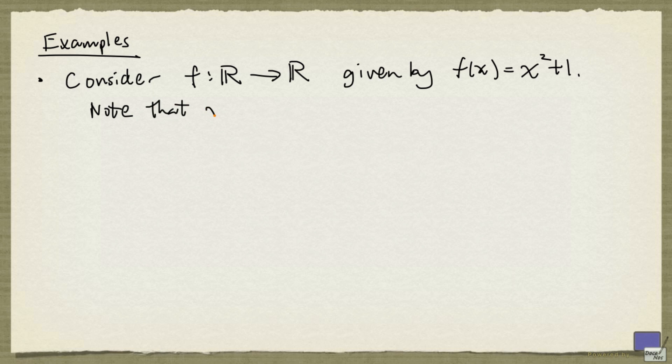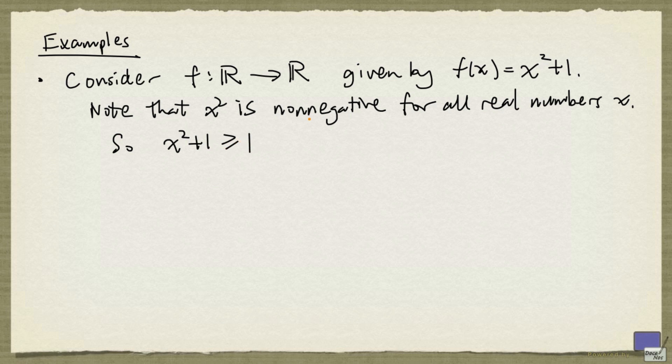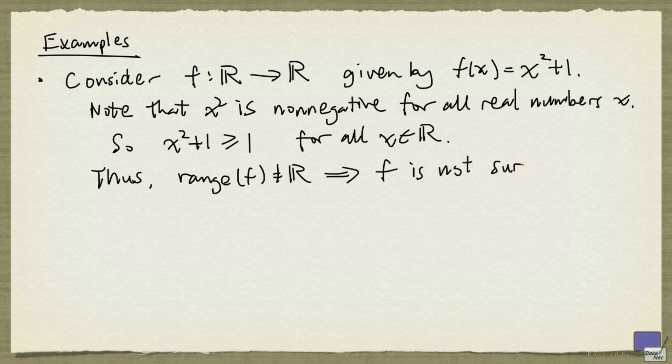That's because x² is non-negative. So x² + 1 is going to be at least 1 for all real numbers x. Thus, the range of f cannot be all of the real numbers. And that implies that f is not surjective.